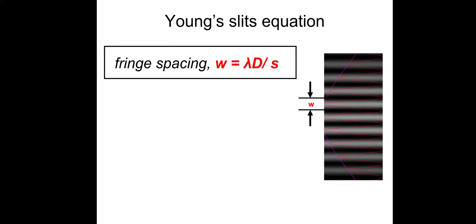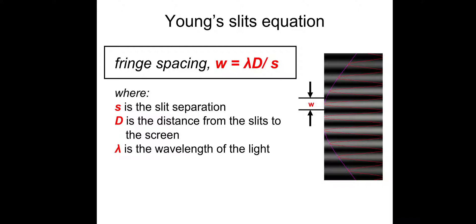The Young slit equation: the fringe spacing, which is the distance between or the space of the fringe itself, denoted here as W, is equal to λD/S. So S is the slit separation, D is the distance from the slits to the screen, and λ is the wavelength of the light.